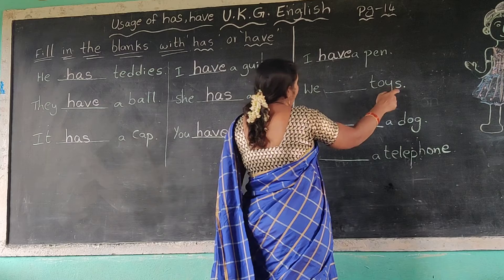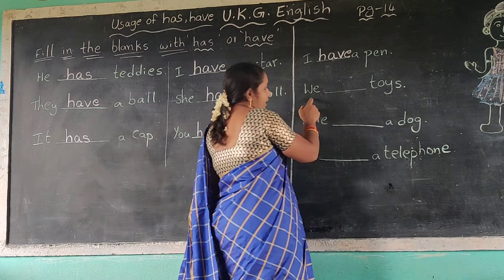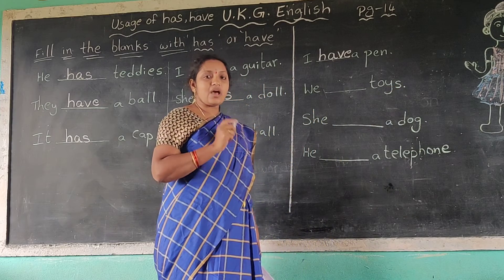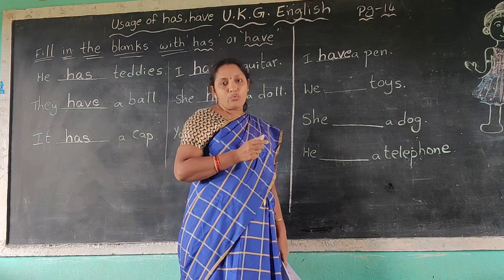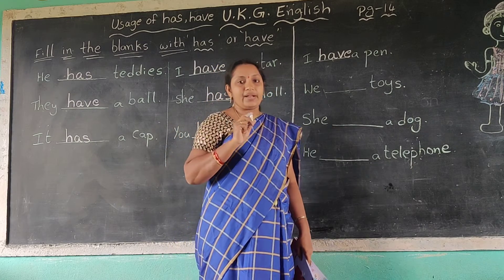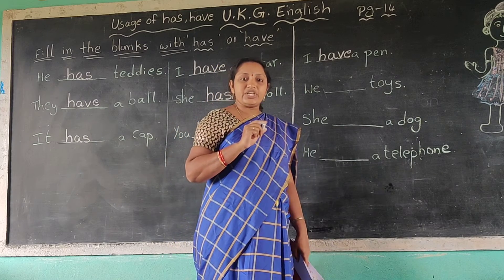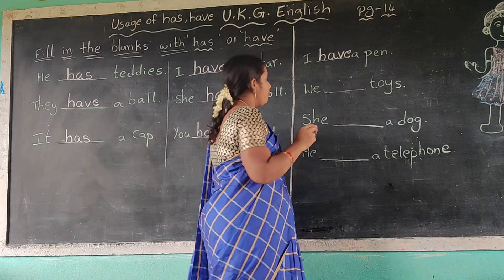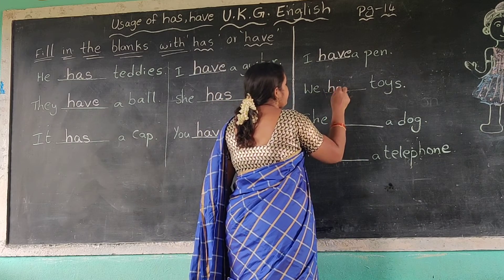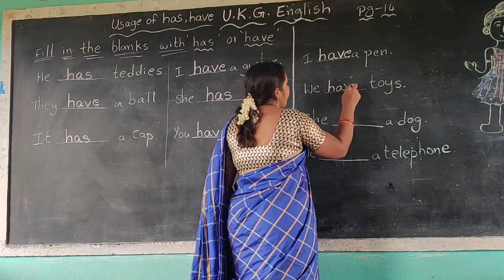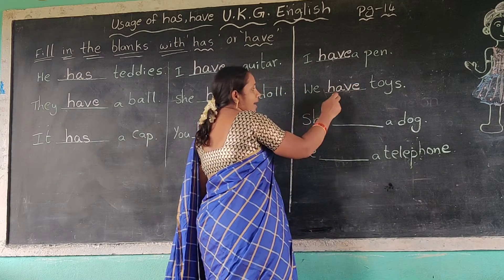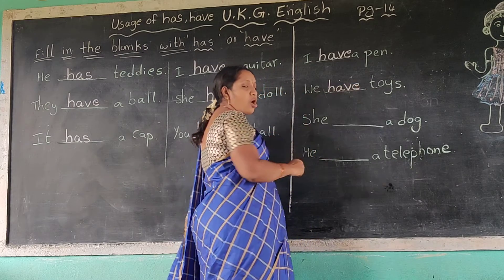Next one: we dash toys. We — have. H-A-V-E. We have toys. Write here, have, spelling H-A-V-E. We have toys.